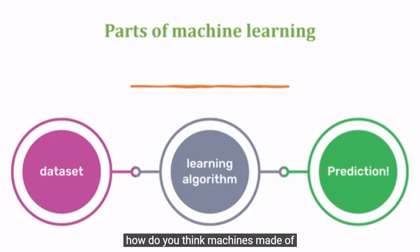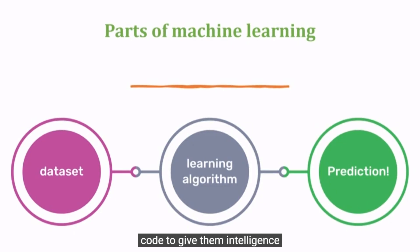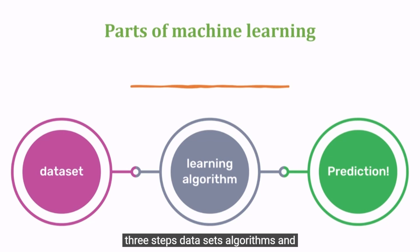How do you think machines made of plastic and metal gain intelligence? This is possible because humans write code to give them intelligence. Most machines gain intelligence through three steps: data sets, algorithms, and prediction.